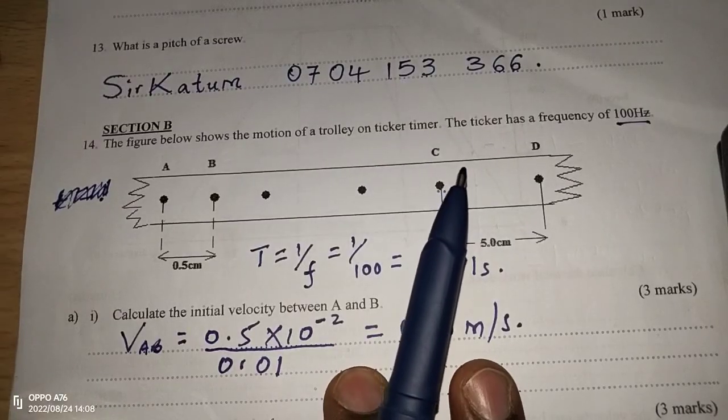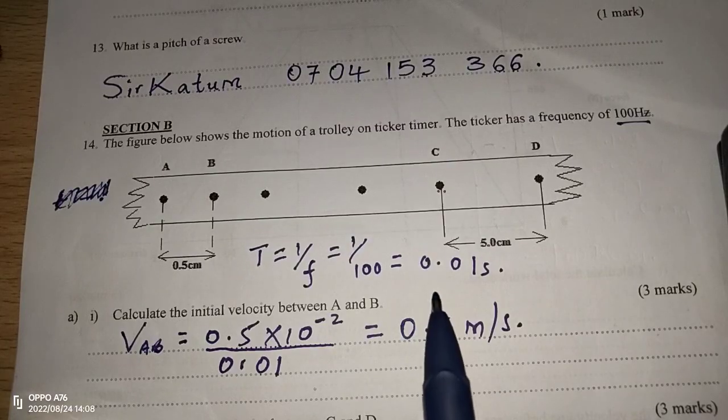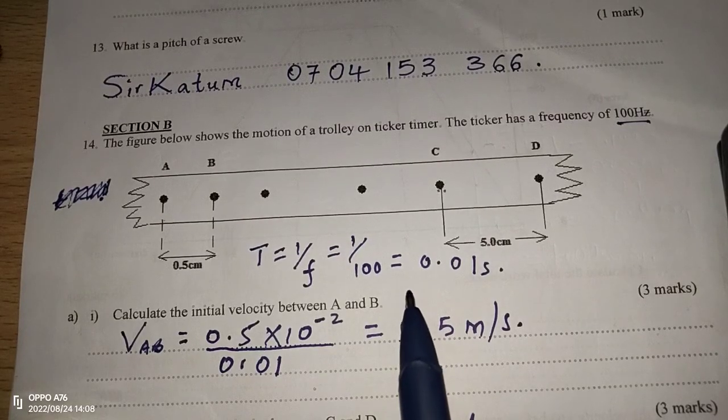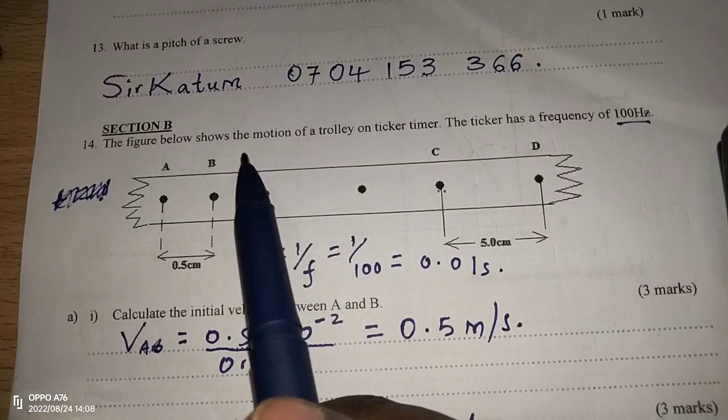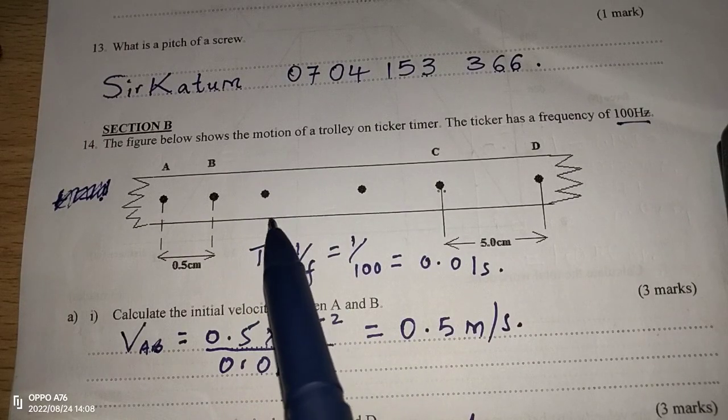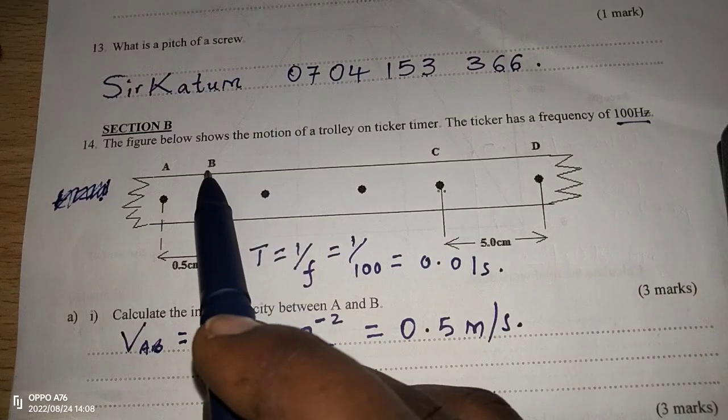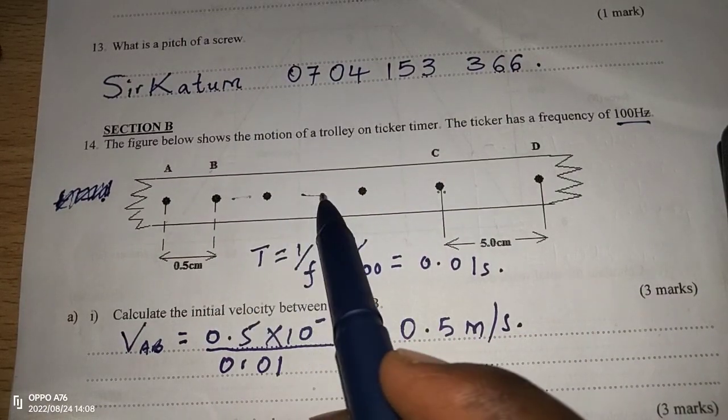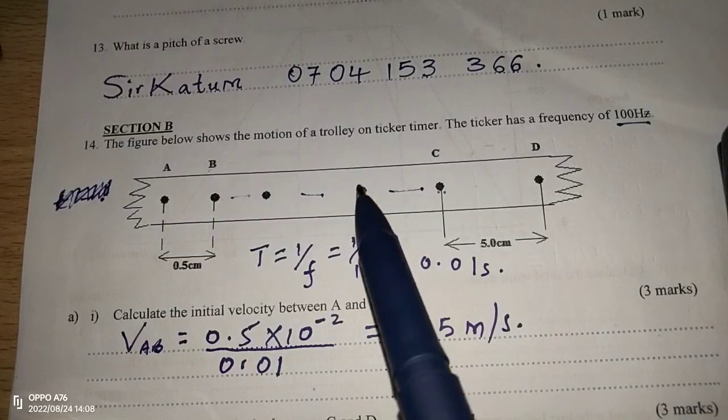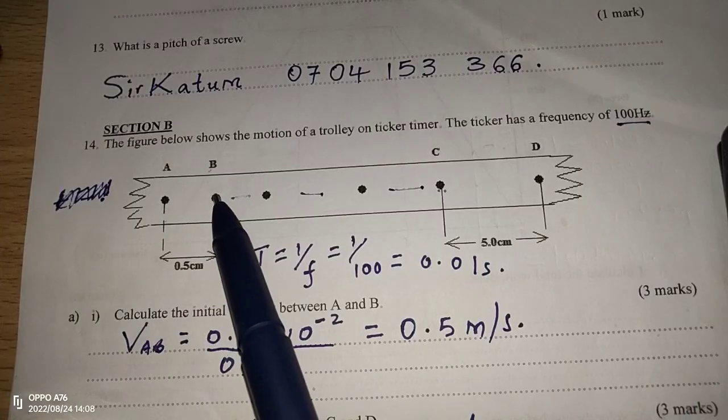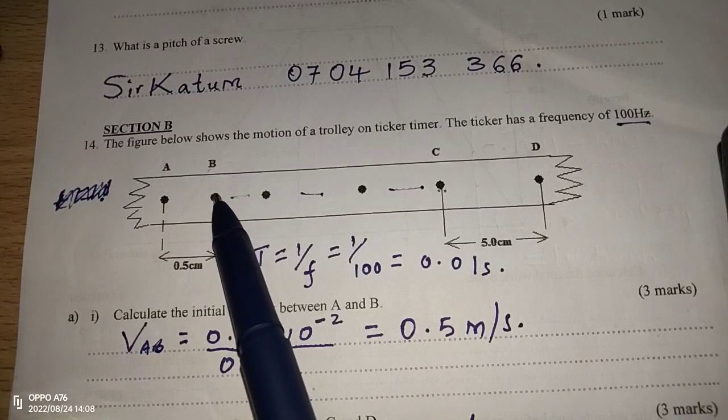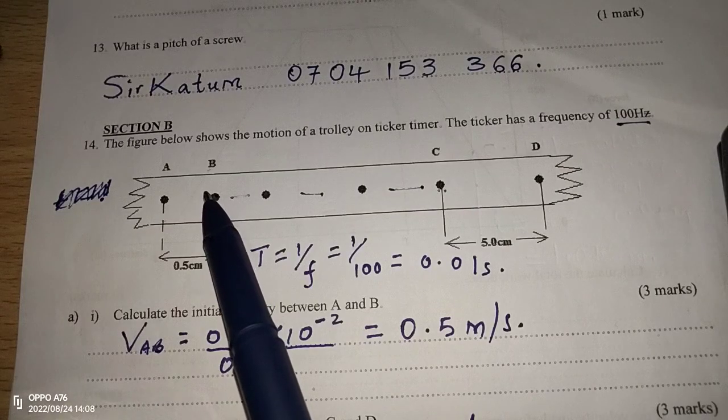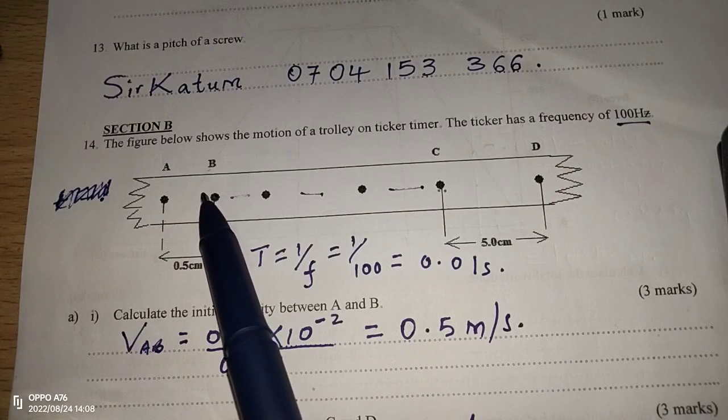And this is how we get the time taken. We first of all calculate the complete gaps between B and C, which are going to be 1, 2, 3. Then, between A and B, the number of gaps is only 1. Between C and D, the number of spaces is only 1.